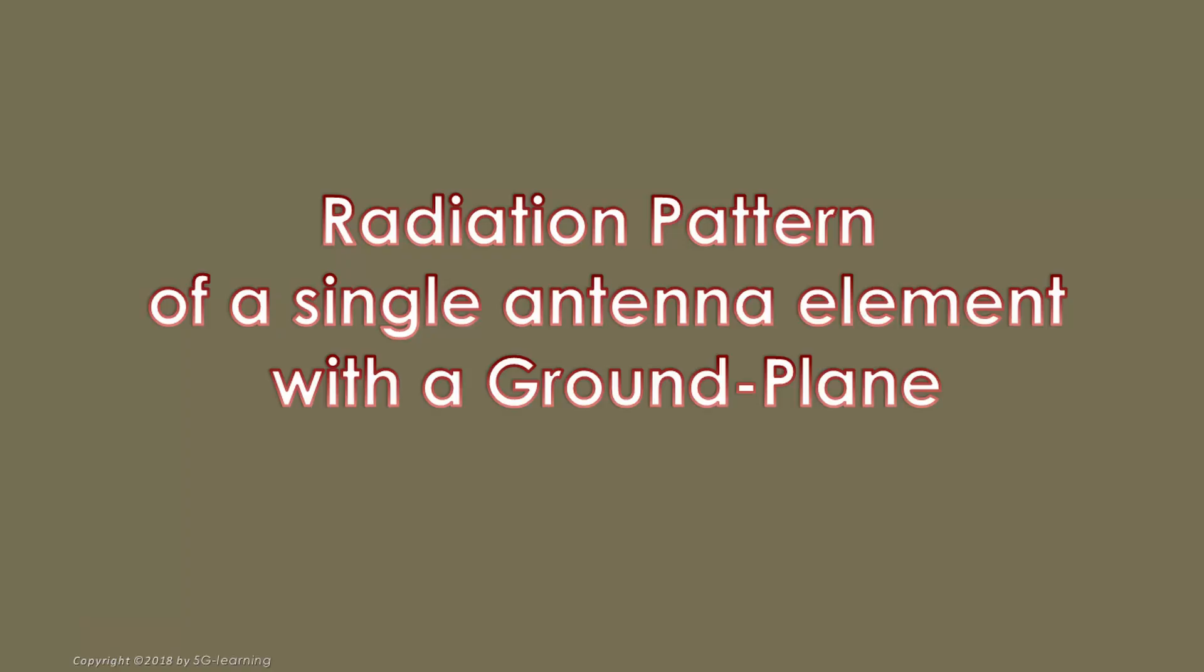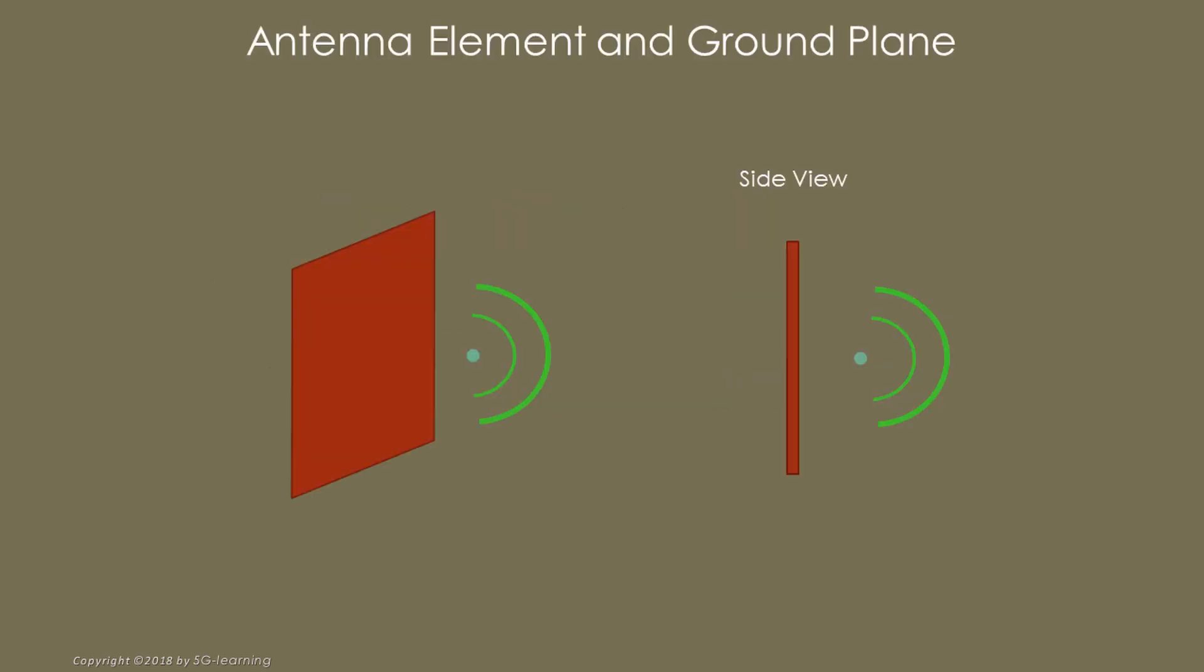Radiation Pattern of a Single Antenna Element with a Ground Plane. In this section, we address the behavior of a Single Antenna Element placed near a Large Metallic Plane. Suppose that D is the distance between the antenna element and the plane. The electromagnetic waves are reflected by the metallic plane. The plane behaves like a mirror.